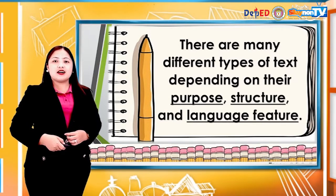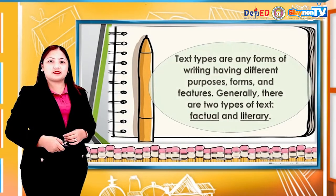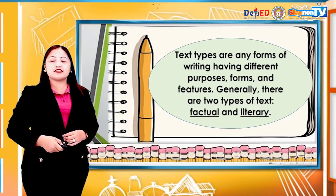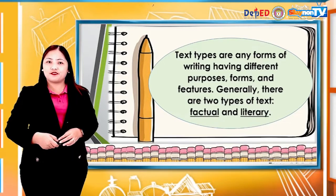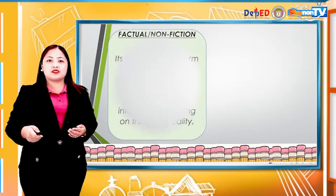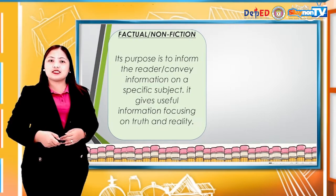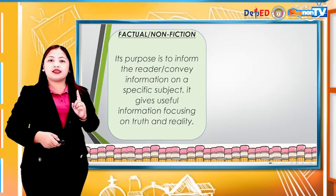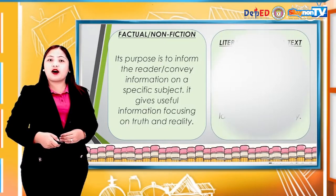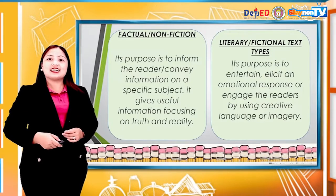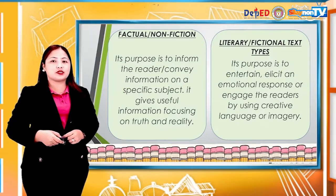There are many types of text depending on their purpose, structure, and language feature. Text types are any forms of writing having different purposes, forms, and features. Generally, there are two types of text: factual and literary. Factual or non-fiction text aims to inform the reader and convey information on a specific subject, focusing on truth and reality. Literary or fictional text aims to entertain, elicit an emotional response, or engage readers using creative language or imagery.